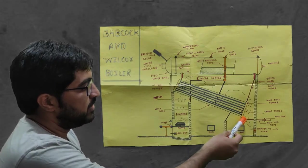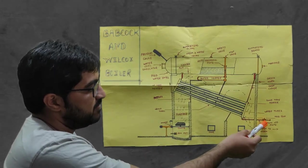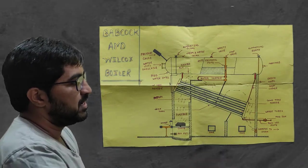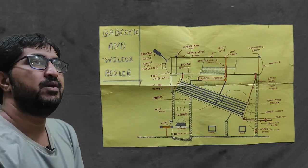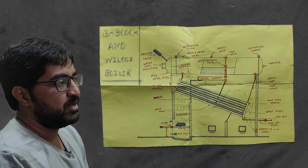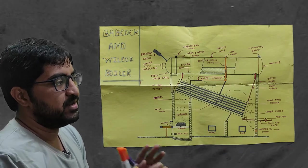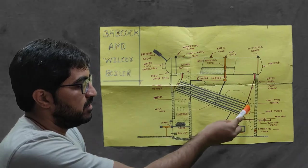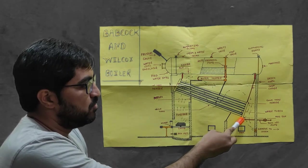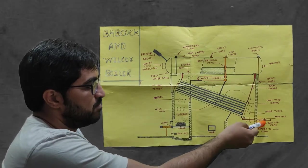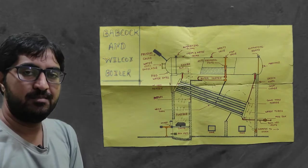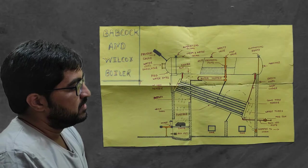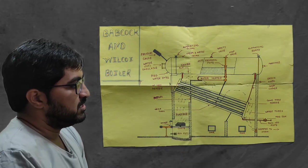The downtake header is connected with the blow-off pipe. Sometimes impurities are present in the water, and due to density difference, high-density particles settle and are collected in the mud box. You can remove the impurities from the mud box — that is the function of the mud box.